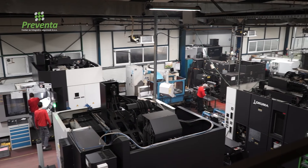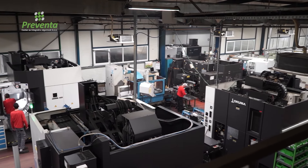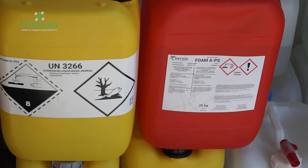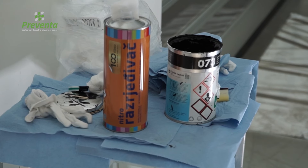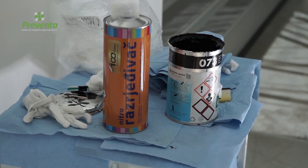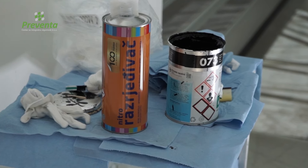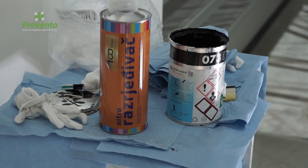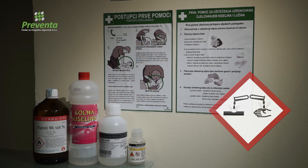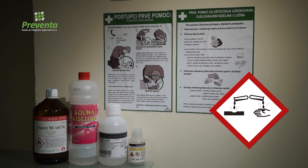Chemicals used in various work processes can often be corrosive, flammable, and explosive. Toxic substances such as solvents, when ingested, cause poisoning and damage certain organs. Corrosive substances such as acids and alkalis cause damage to the skin, eyes, respiratory tract, and digestive organs.